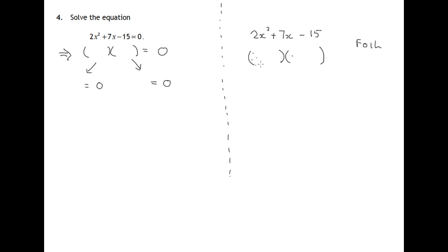We know that this expression here times this expression here will give us 2x squared. Now there is only one choice for that. We have to have a 2x times an x. So there's our first possibility: a 2x there and an x there.